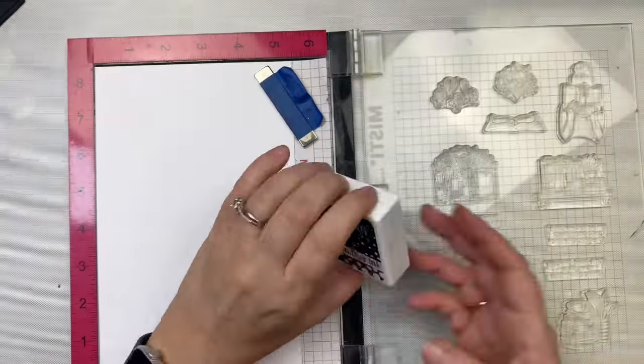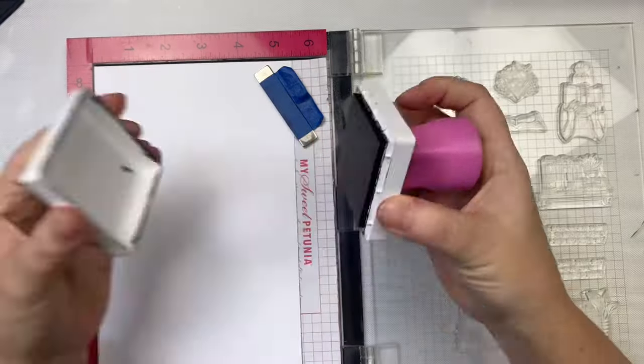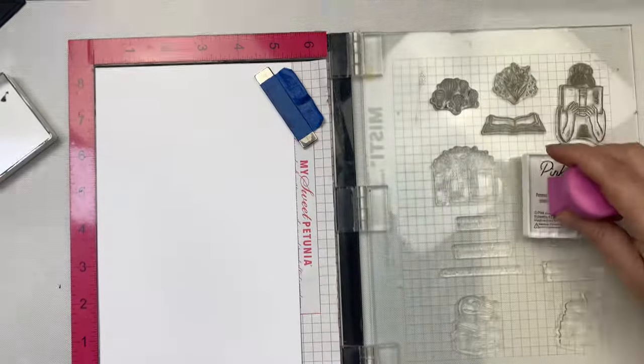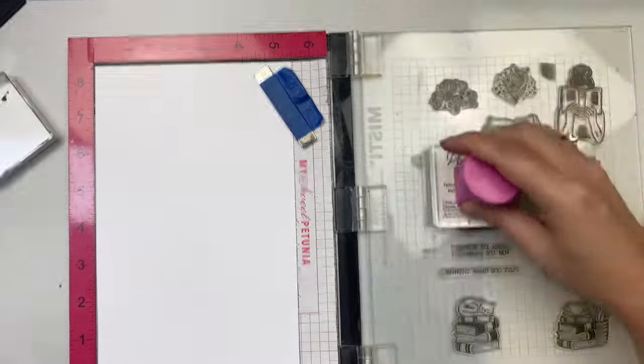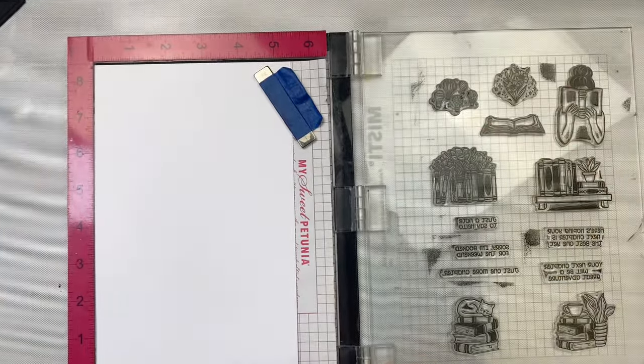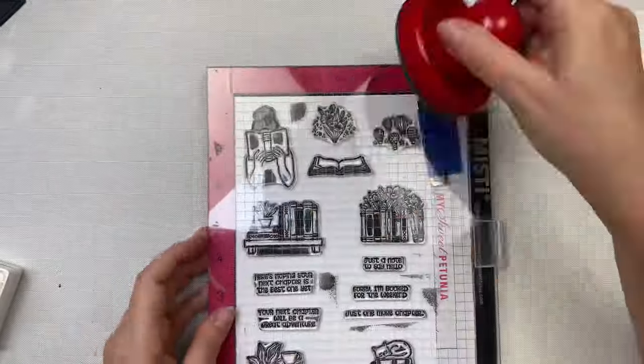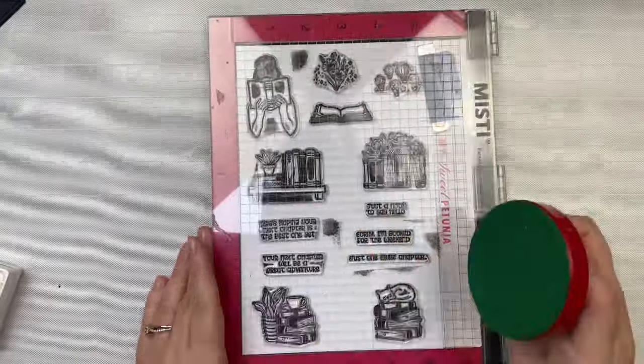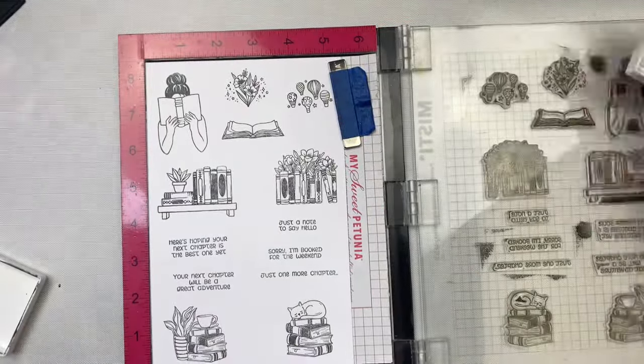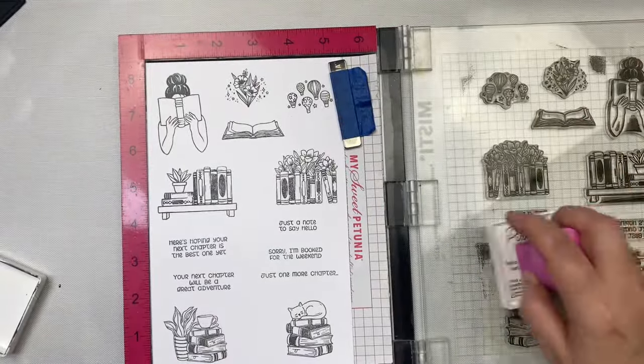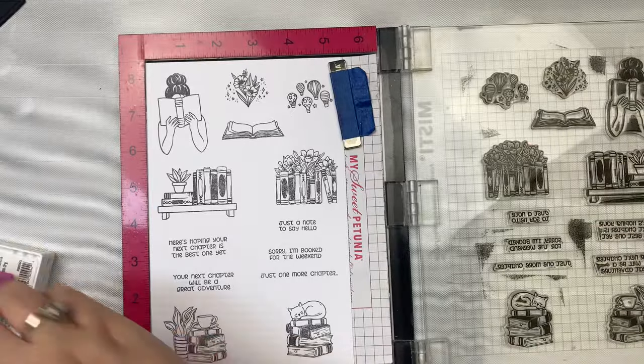I'm using my Misty stamping platform and I've placed a half sheet of Express It blending card stock inside since it's great for use with Copic markers. I've laid out all of the stamps, spacing them out so that I can use the coordinating dies on top to cut those out when I'm done. I'm using the Pink and Main asphalt ink and I love that it has this handle that you can use to apply the ink. This comes with the ink bundle.